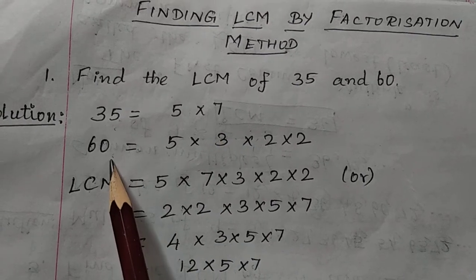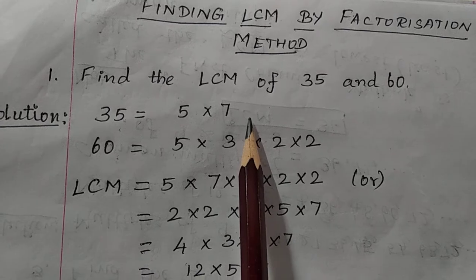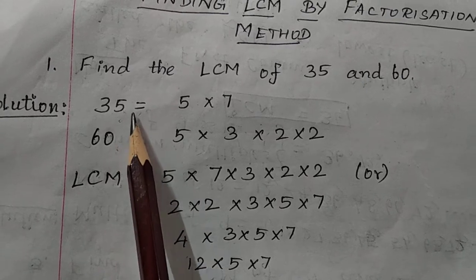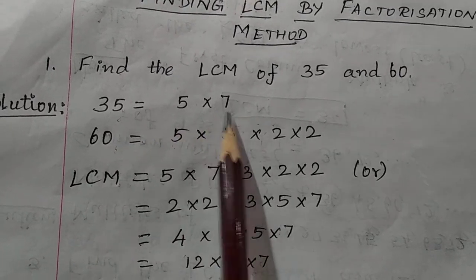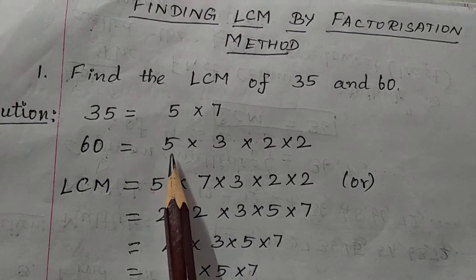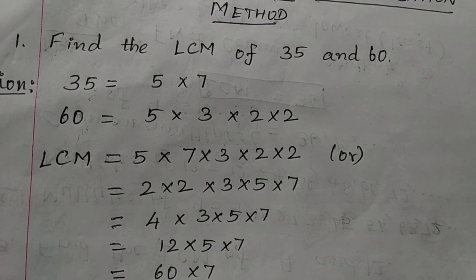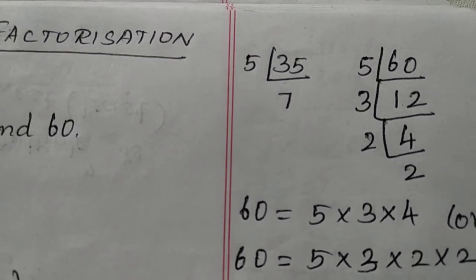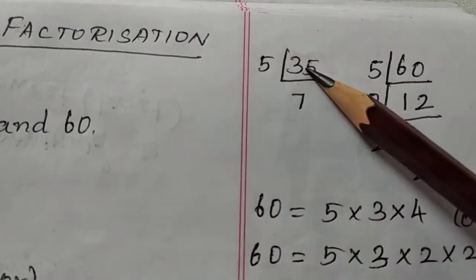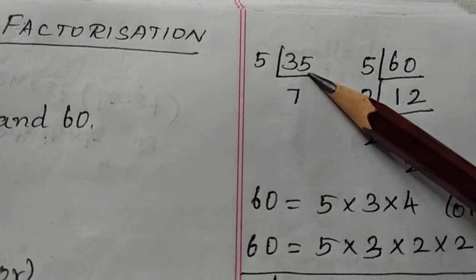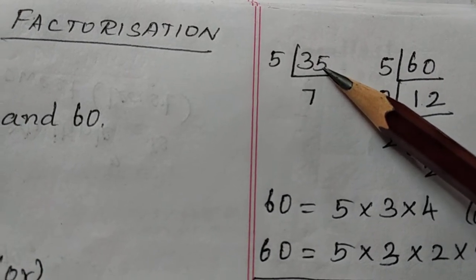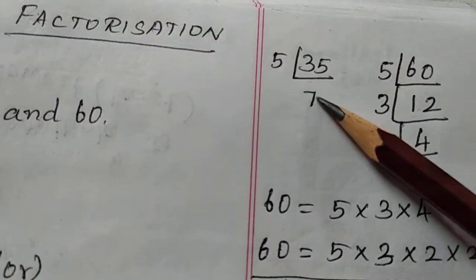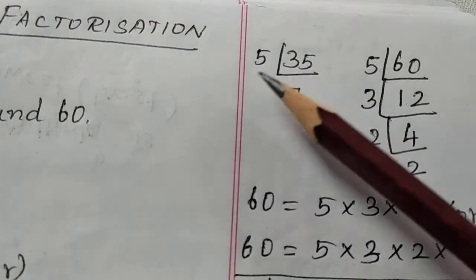Express 35 as a product of its factors. 35 can be written as 5 into 7. Since 35 ends with 5, it is divisible by 5. 35 divided by 5 gives 7. So 35 = 5 × 7. Similarly, 60 ends with 0, so it is divisible by 5. 60 divided by 5 gives 12, then 12 = 3 × 4 = 3 × 2 × 2. So 60 = 5 × 3 × 2 × 2.